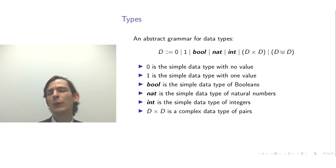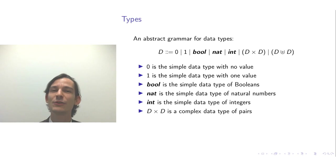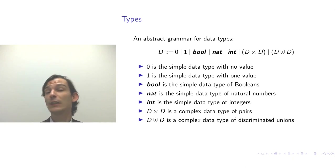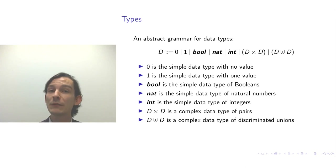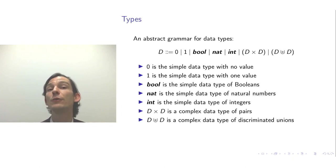If you remember, we had the complex data type of pairs. Those can be formed if we know the data type on the left and the data type on the right — then we can form pairs of those data types, whose values are 2-tuples. We furthermore have the complex data type of discriminated unions. If you form the discriminated union of D on the left and D on the right (which need not be the same), this allows you to use values from either data type, but you always know which value came from which side.